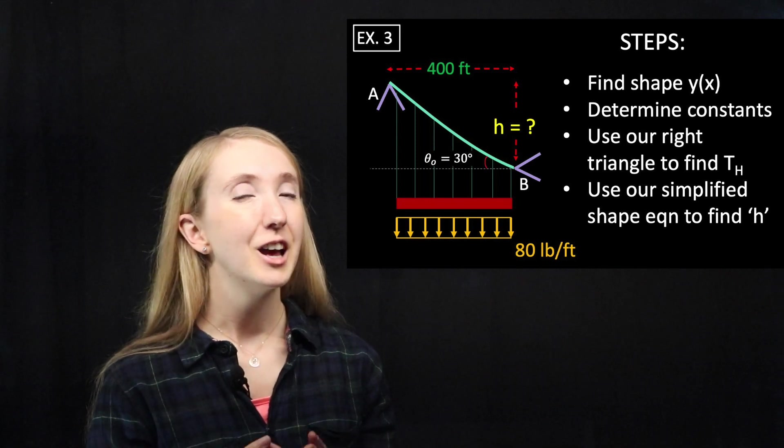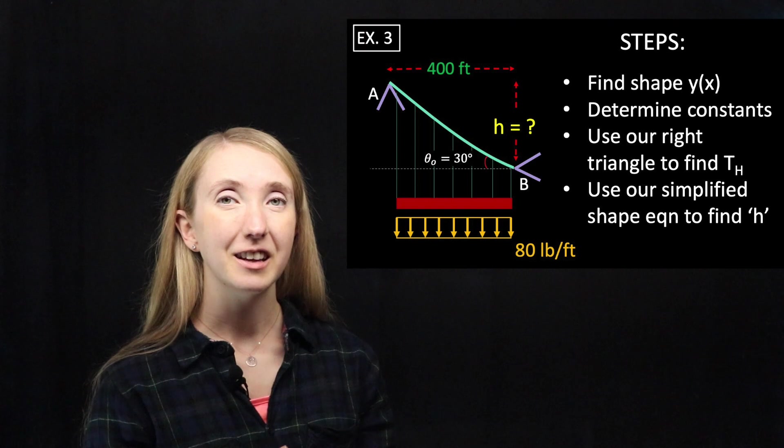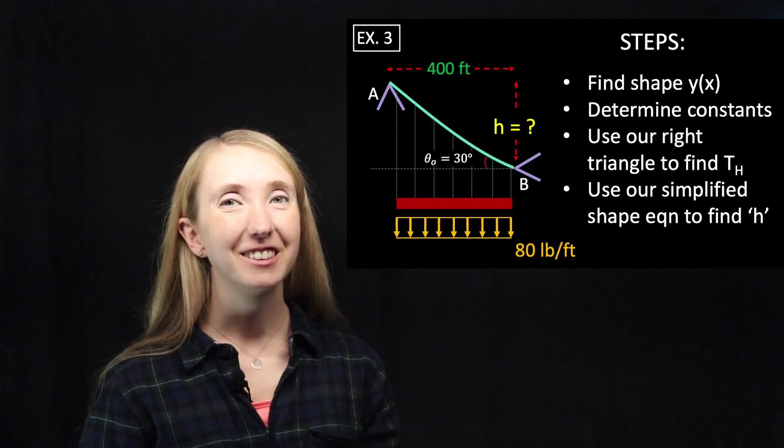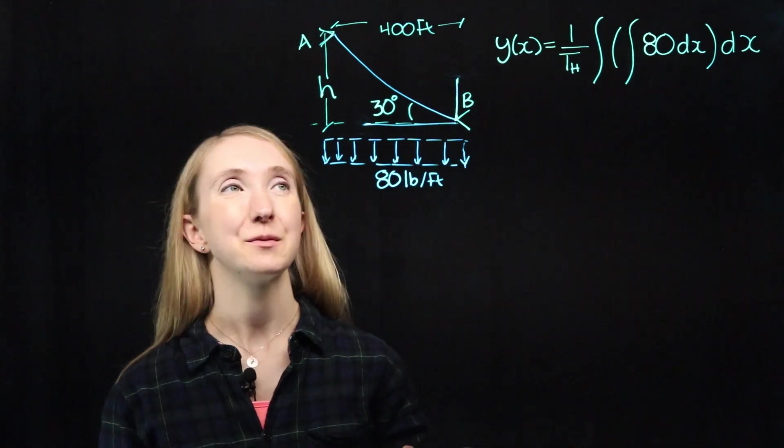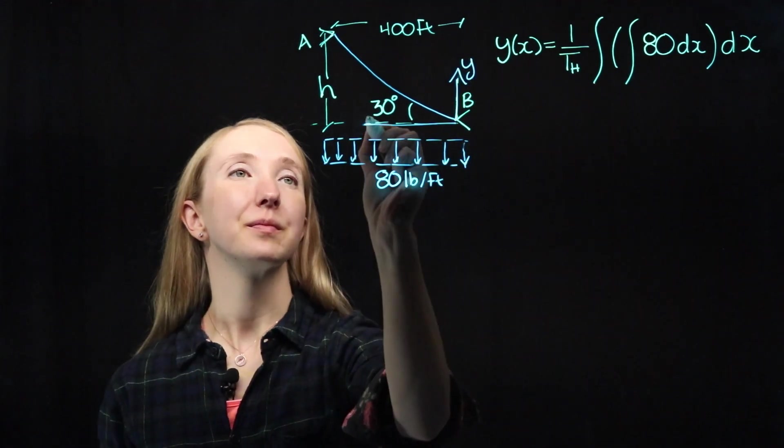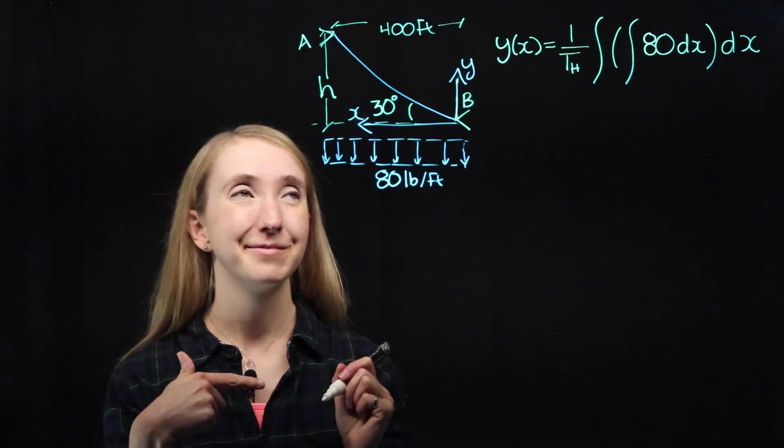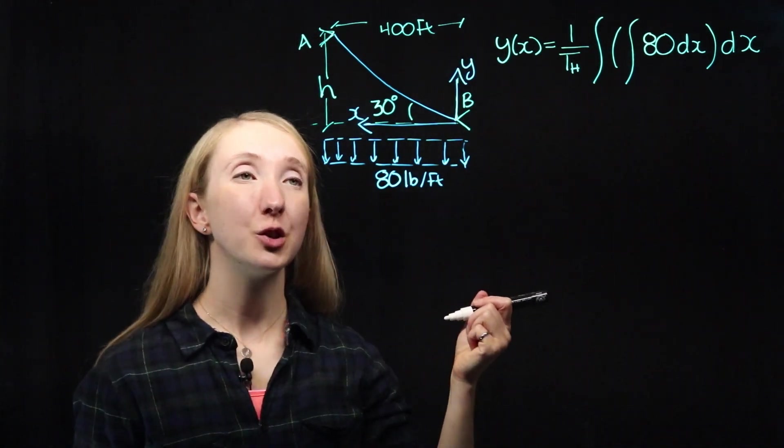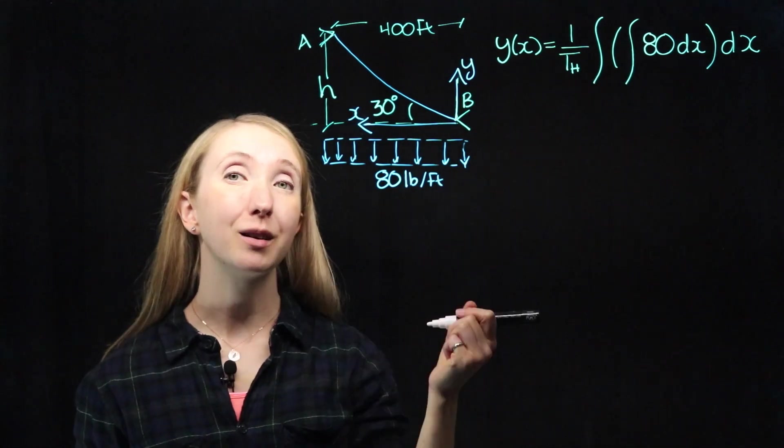But we're just going to work with the relationships we already know. We'll find our shape equation, determine our constants, find our horizontal tension, and then use our shape equation to find our h. The first thing we want to do is define our coordinate system. There's no rule that says x always has to go that way. Next, we can find our shape equation by integrating twice, using our uniform load of 80 pounds per foot.